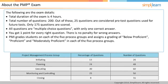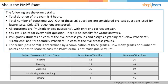The percentage of questions from each of these aspects is listed on the table. The result, pass or fail, is determined by a combination of these grades. How many grades or number of points one has to score to pass the PMP exam is not made public by PMI.